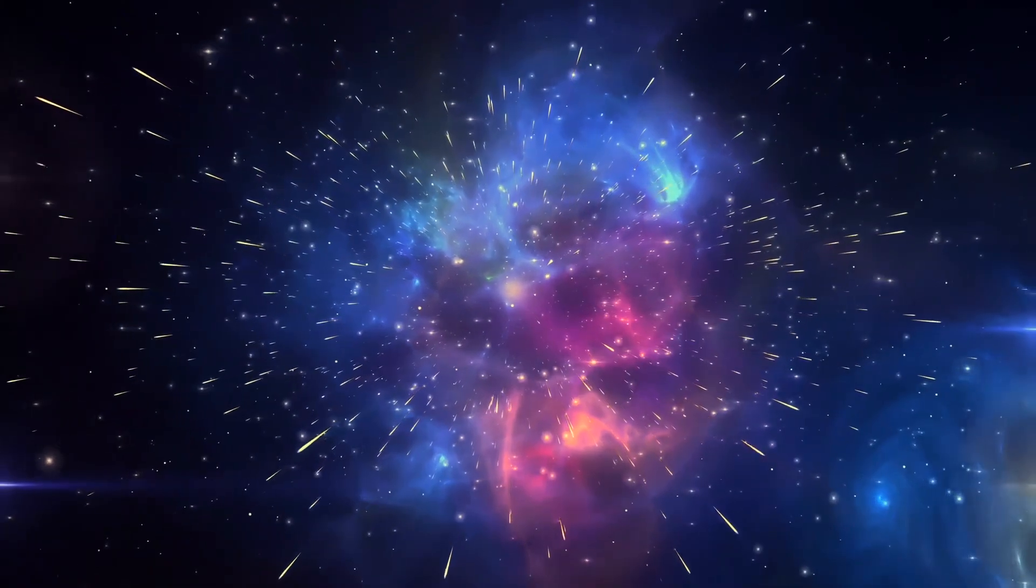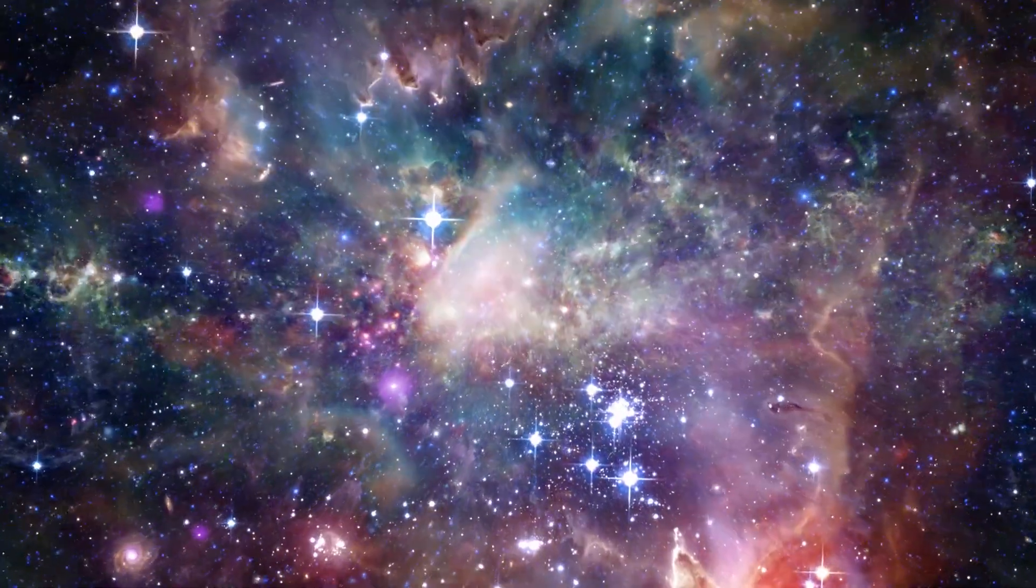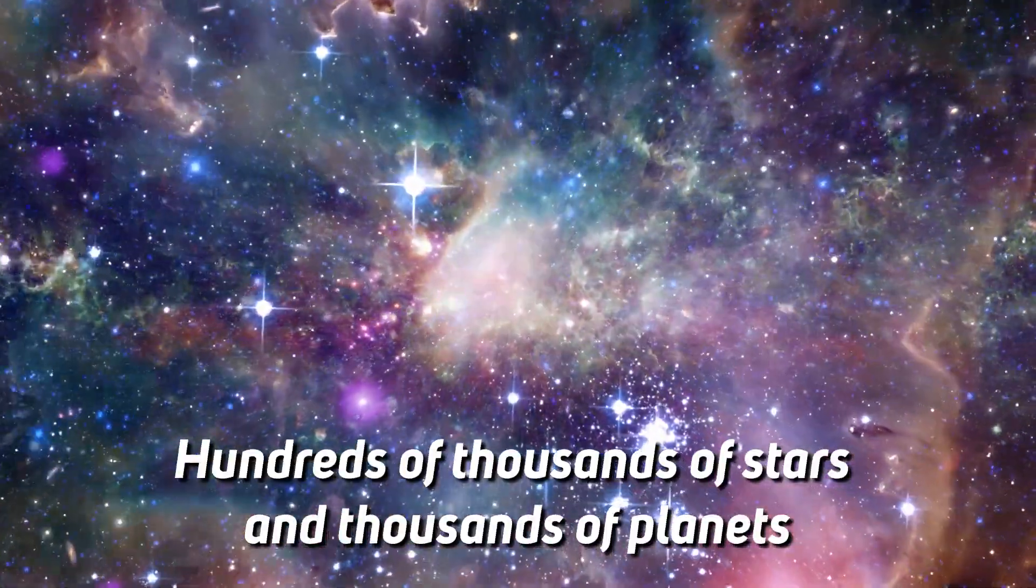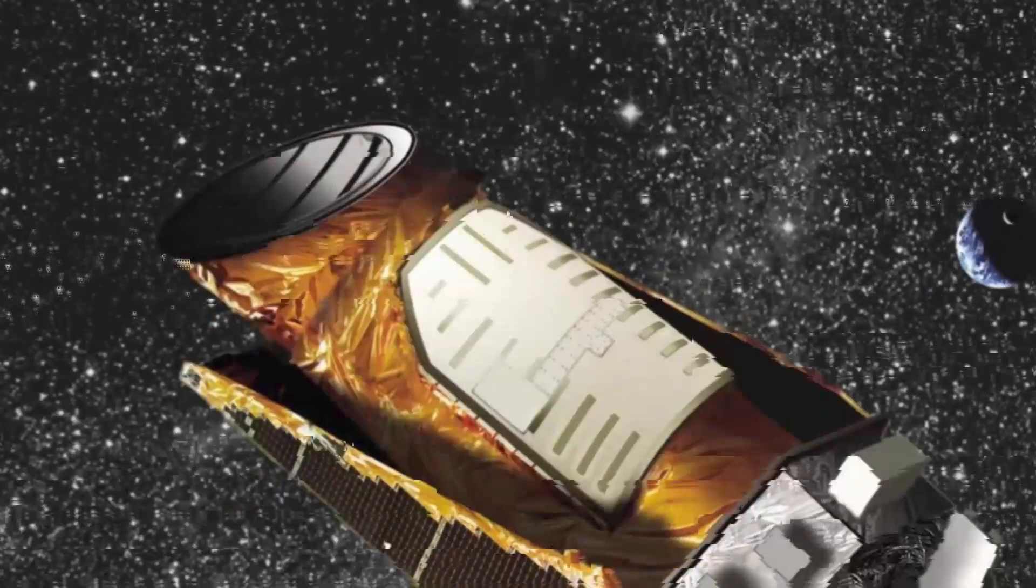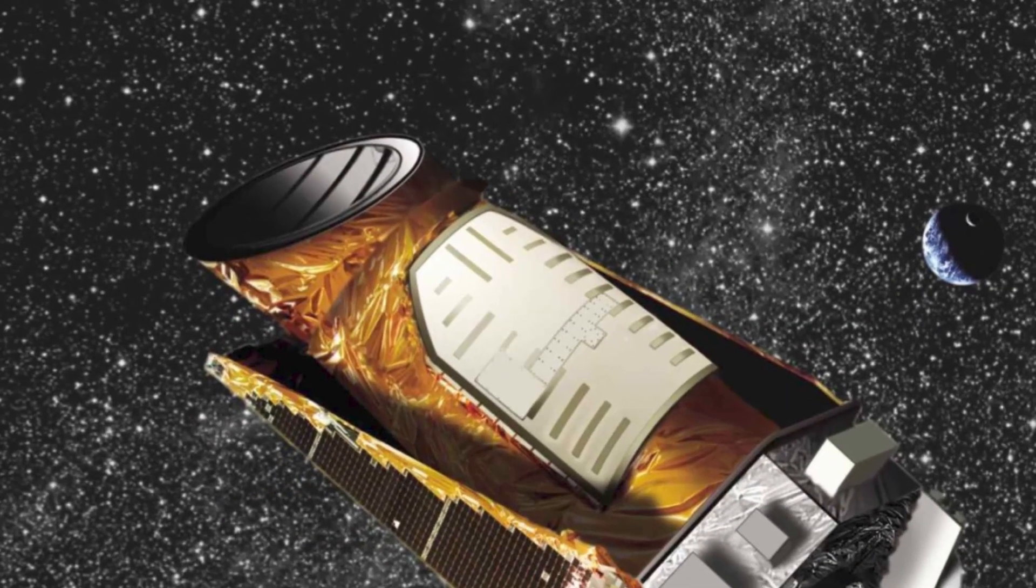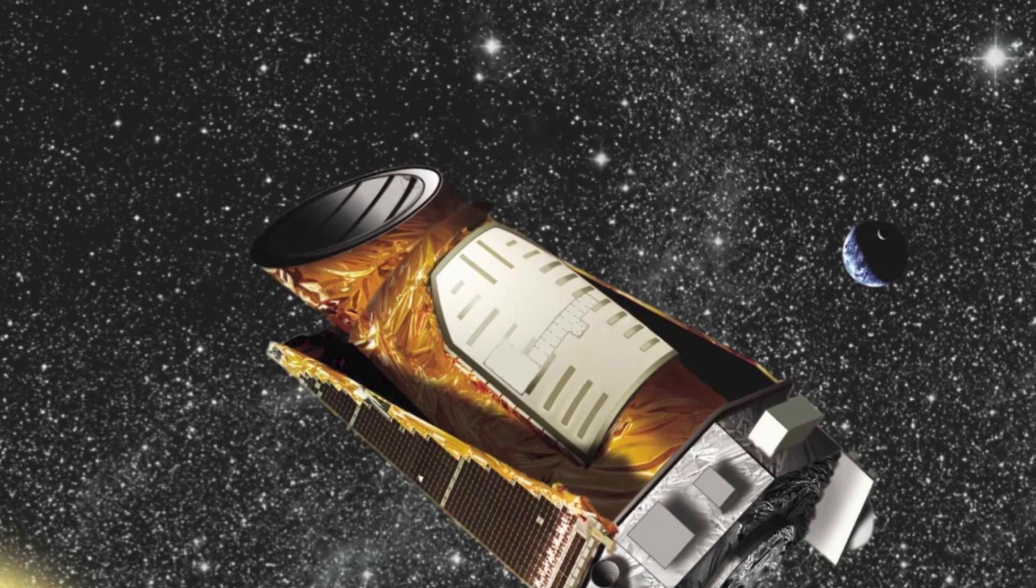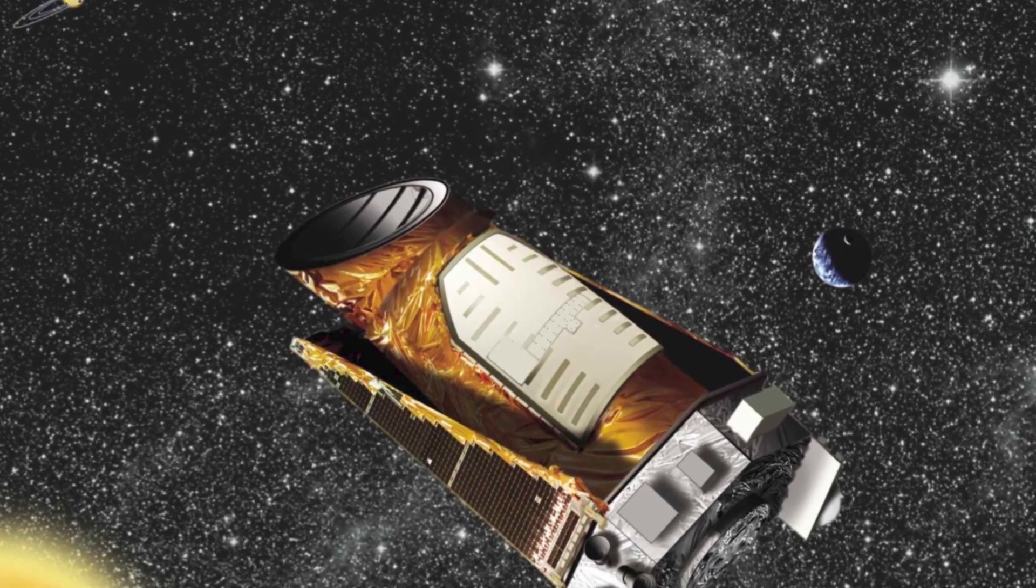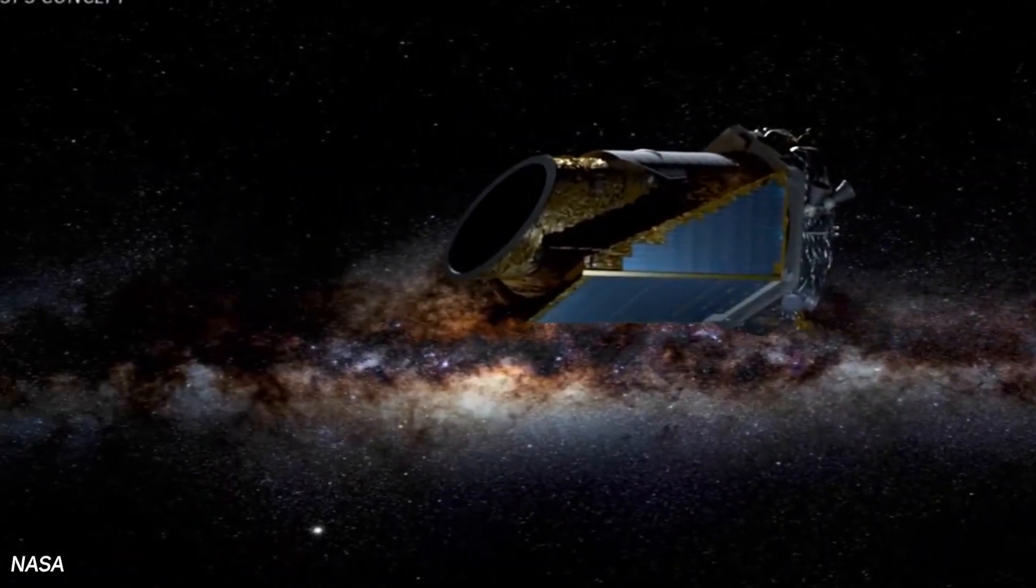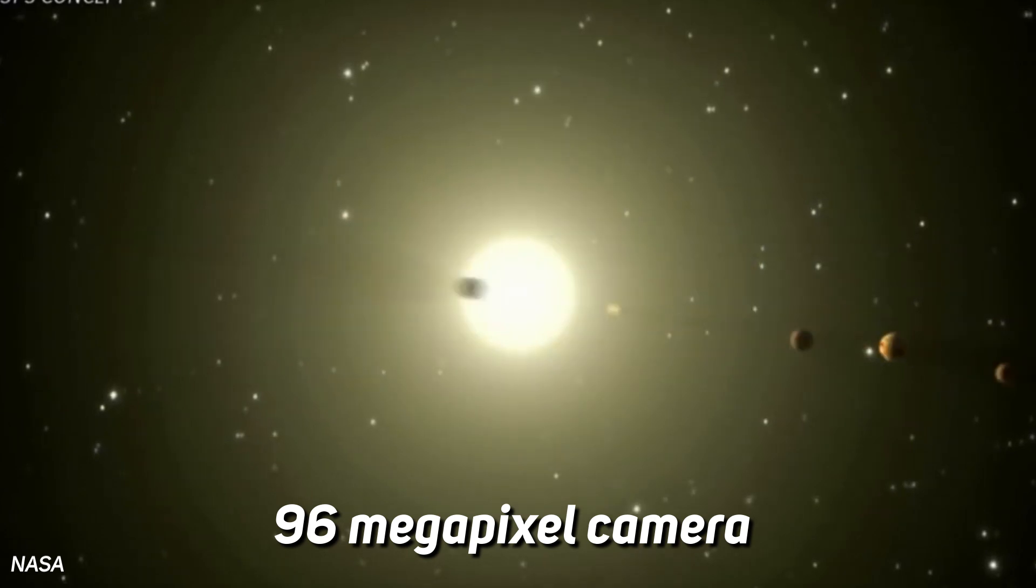Ever since then, the Kepler telescope was able to look at hundreds of thousands of stars and thousands of planets. When the Kepler telescope was launched, it had the largest primary mirror ever integrated into any telescope. The Kepler telescope also had a 96-megapixel camera to process the light collected by the primary mirror.